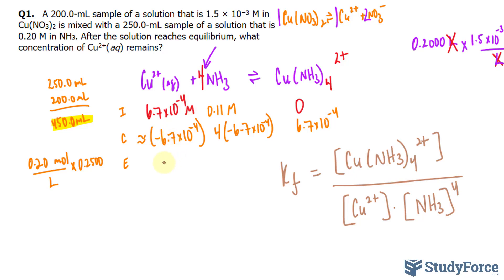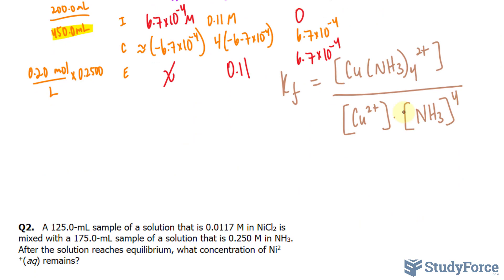At equilibrium, this will be X, this will be 0.11, and this will be 6.7 times 10 to the power of negative 4. If we substitute those values into this equation, the right side should have the following values. The formation constant, as found here, is 1.7 times 10 to the power of 13.